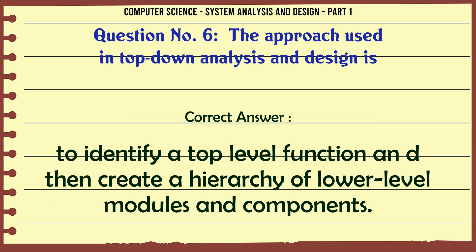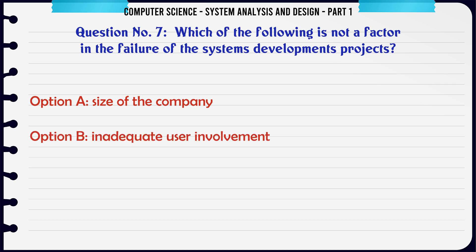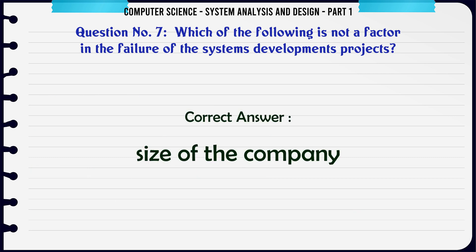Which of the following is not a factor in the failure of systems development projects? A. Size of the company. B. Inadequate user involvement. C. Failure of systems integration. D. Continuation of a project that should have been cancelled. The correct answer is: Size of the company.